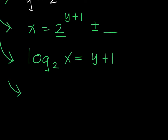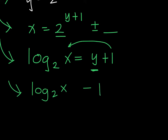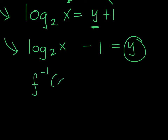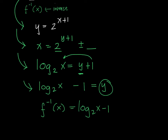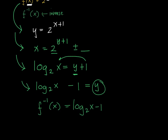One final step — since our goal is to isolate y, subtract 1 from both sides. So log base 2 of x minus 1 equals y. This y is the inverse of the given exponential function. The key is to convert the exponential expression to its logarithmic form immediately, then apply any additional steps needed to isolate y.